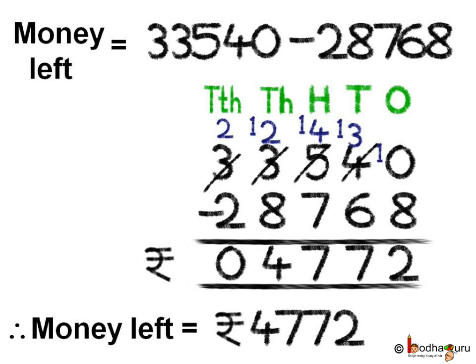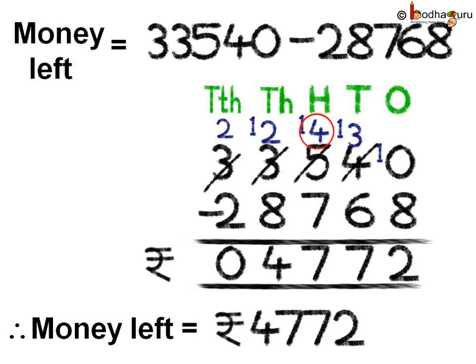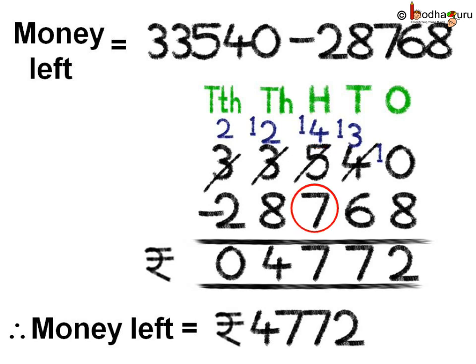Coming to the tens place: 3 minus 6. Since 6 is more than 3, we need to borrow again. At the hundreds place, it is 5, so after lending to the tens place, 5 becomes 4. At the tens place, we have 13 now. 13 minus 6 is equal to 7. Now, at the hundreds place, we have 4 minus 7, so again we borrow from the thousands place. The thousands place 3, after lending, becomes 2. So now at the hundreds place, we have 14. 14 minus 7 is 7.